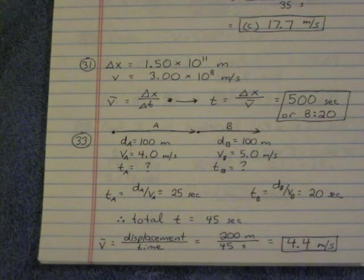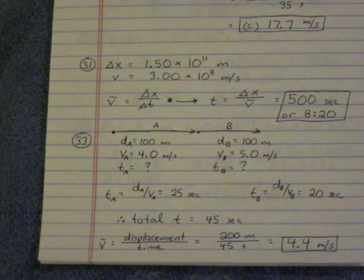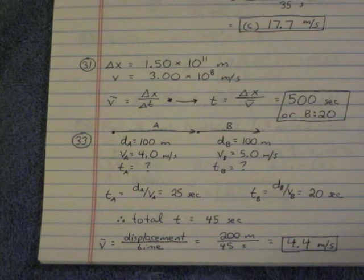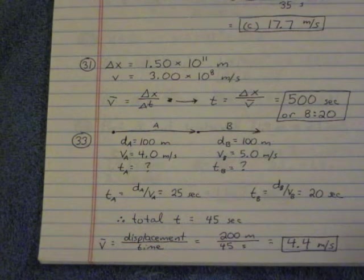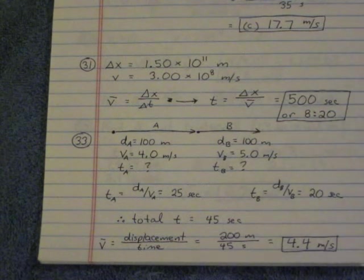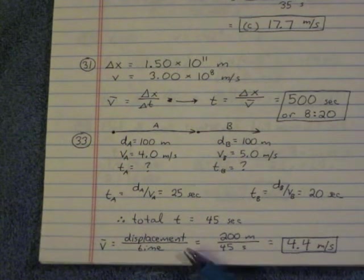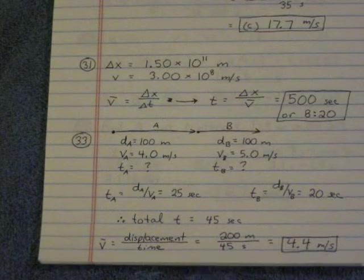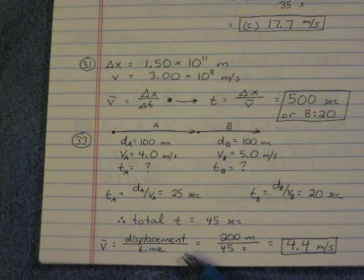Number 33, there are two parts of this race. The first part, you run for the first 100 meters at 4 meters per second. The second part, you run 5 meters per second. What is the average speed? Okay, so in order to find average speed, keep in mind where we're going right here at the bottom of the page. Average speed is displacement divided by time.